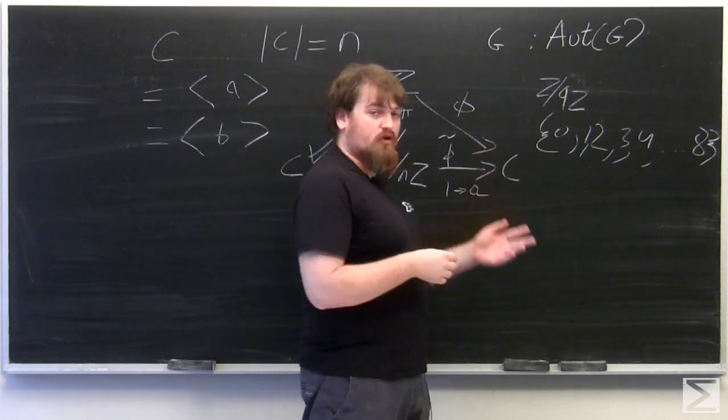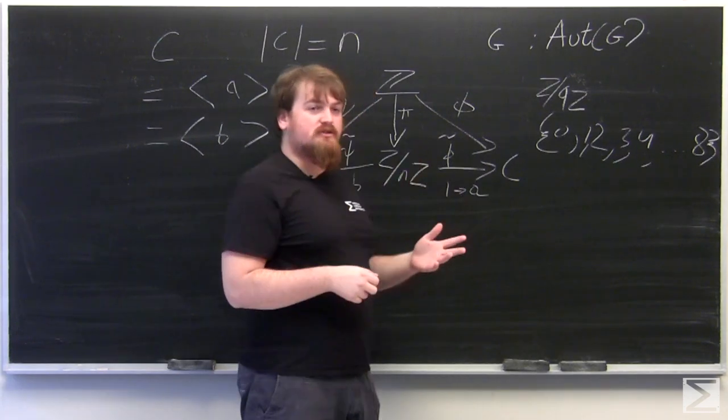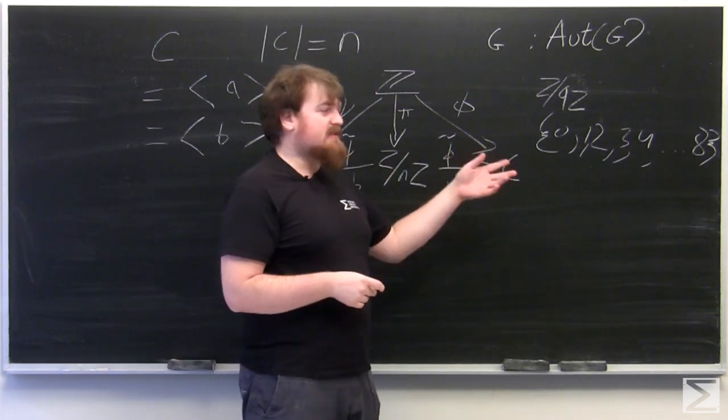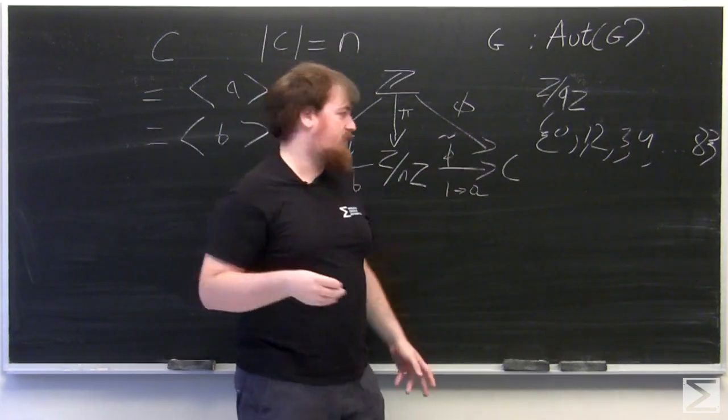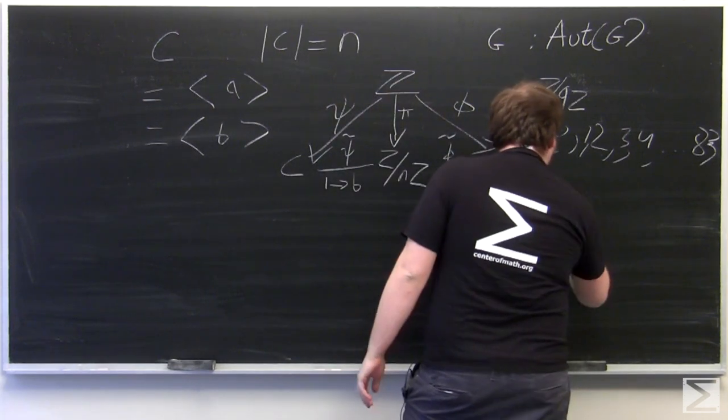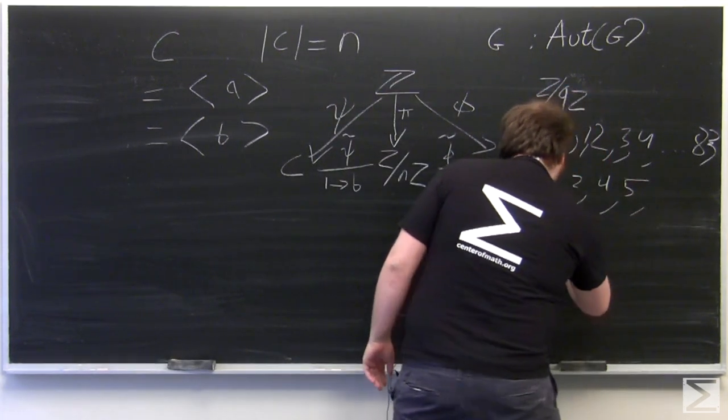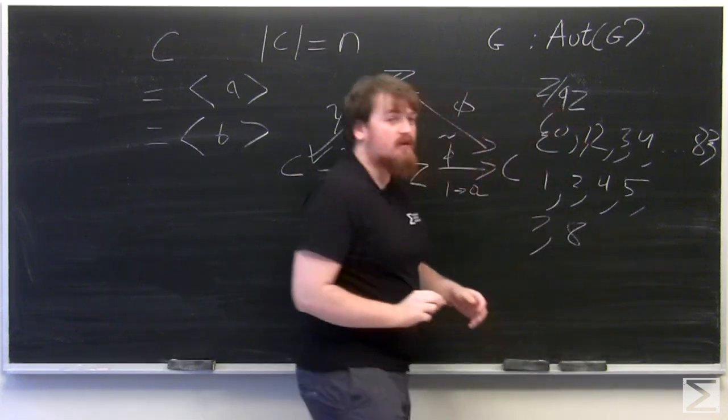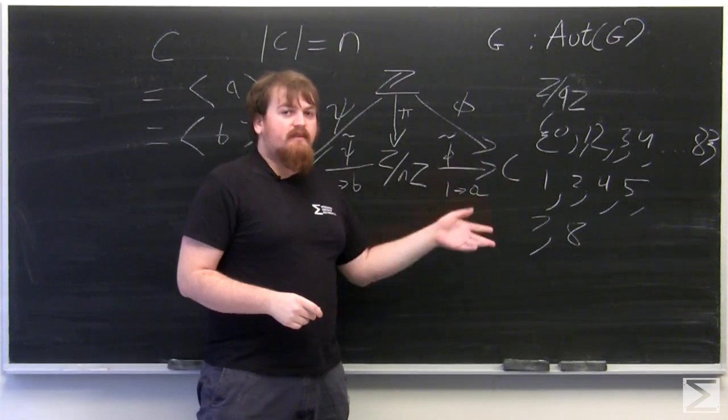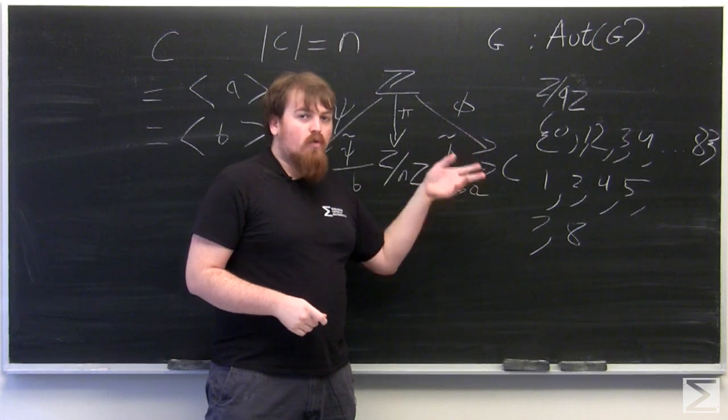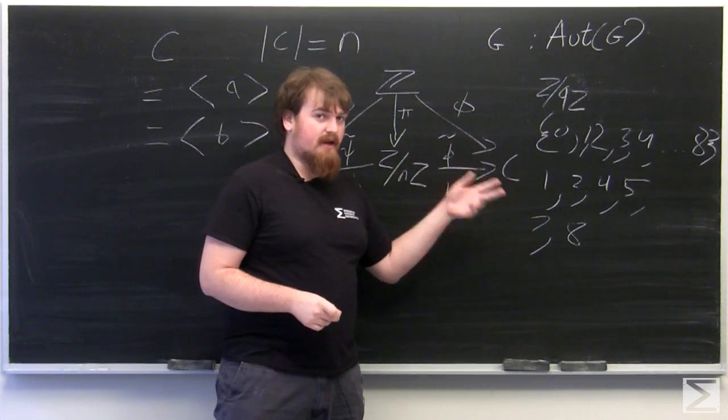Now the generators of this group, as we talked about yesterday, are all the elements less than 9 which are coprime to 9. So these will be 1, 2, 4, 5, 7, and 8. Any of these single elements of Z mod 9Z will generate the cyclic group Z mod 9Z.